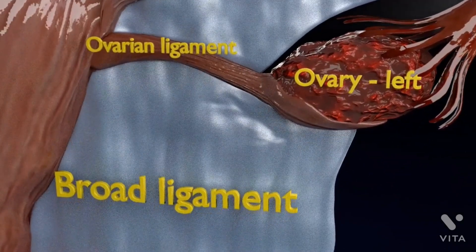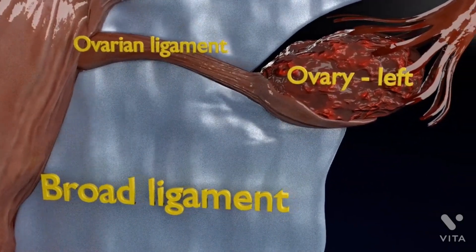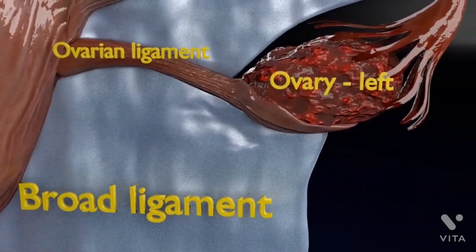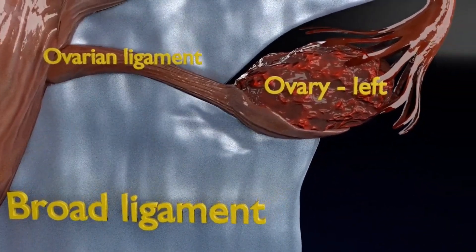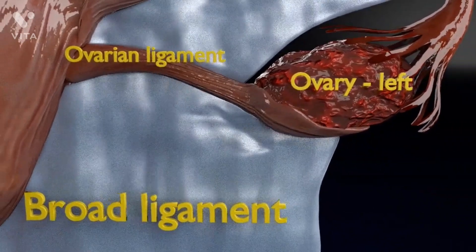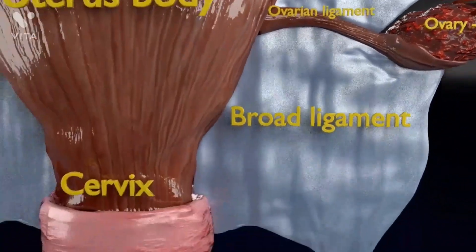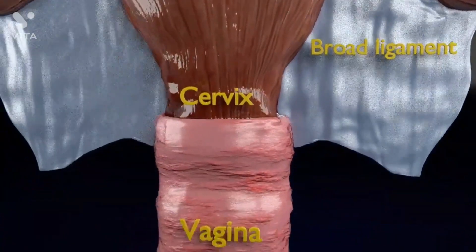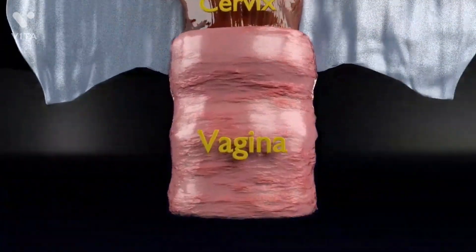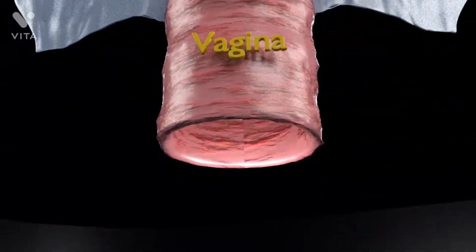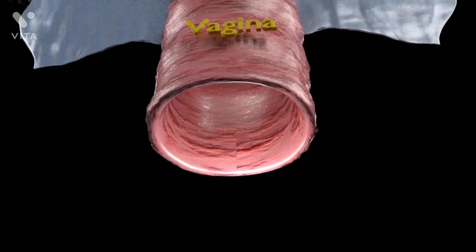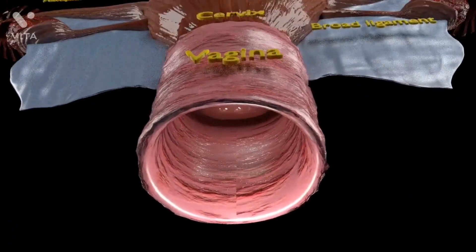The uterus is a secondary sex organ of the reproductive system. The uterus is located within the pelvic region, immediately behind the bladder and in front of the sigmoid part of the colon.